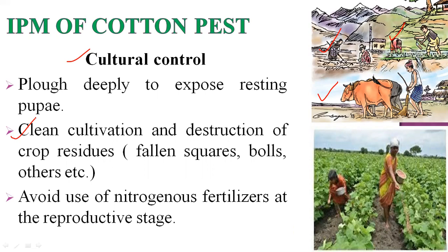Another cultural practice is to avoid excessive nitrogenous fertilizer, because it gives vigorous growth that makes plants more attractive to sucking pests like aphids and jassid. During the reproductive stage especially, nitrogenous fertilizer should be avoided to reduce sucking pest incidence.